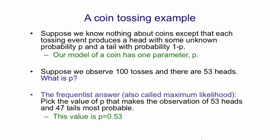The frequentist answer, which is also called maximum likelihood, is to pick the value of p that makes the observations most probable. And that value of p is 0.53. It's not obvious that's true, let's derive that.